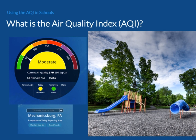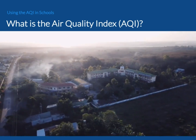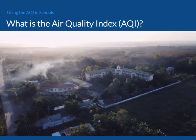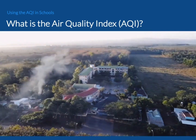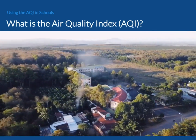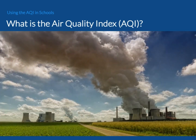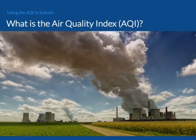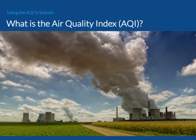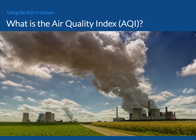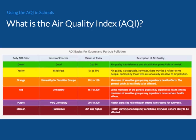The AQI is a scale that goes from 0 to 500. The higher the AQI value, the greater the level of air pollution and the greater the health risk. EPA establishes an AQI for five major air pollutants, including ground-level ozone, particle pollution, also known as particulate matter PM2.5 and PM10.